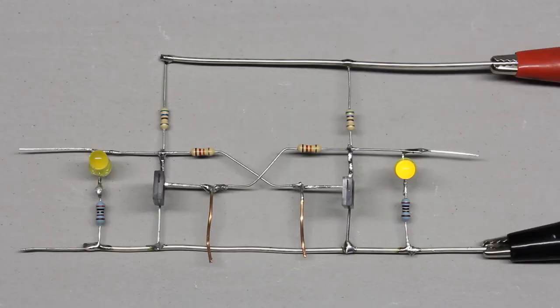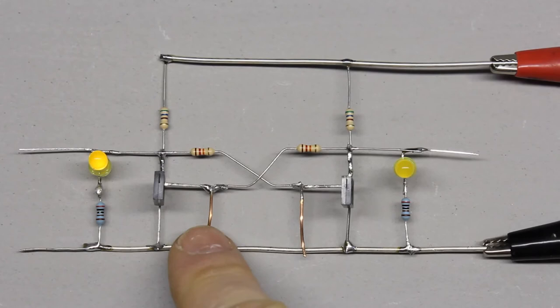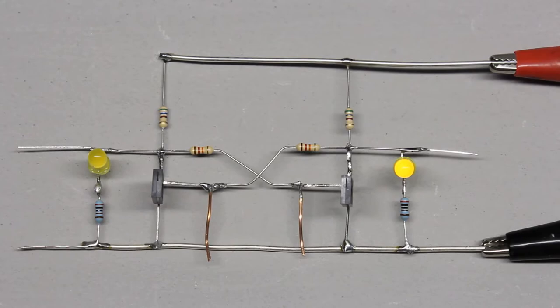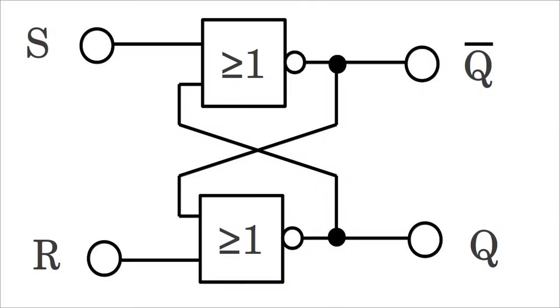A bit can be implemented in electronic circuits by a two-state device, like a latch. Besides using discrete devices, as demonstrated in one of the previous videos, a latch can also be constructed from a pair of cross-coupled NOR logic gates.